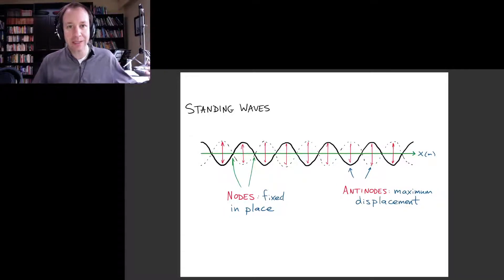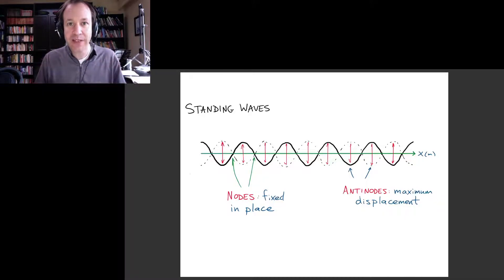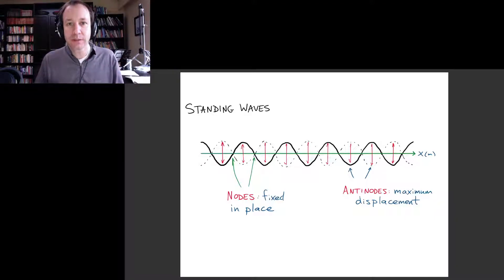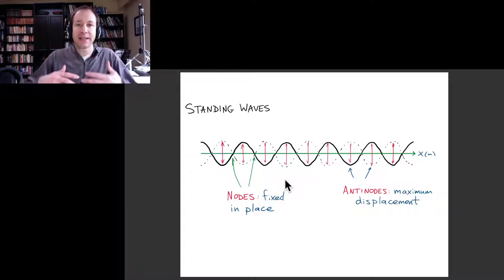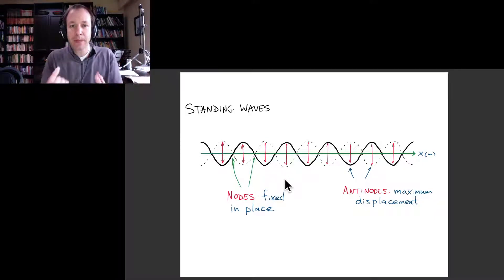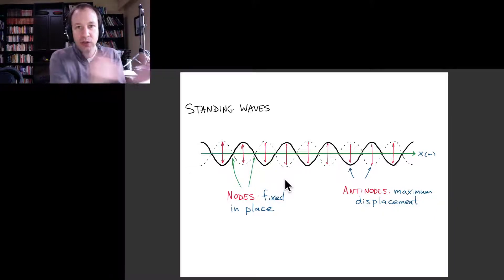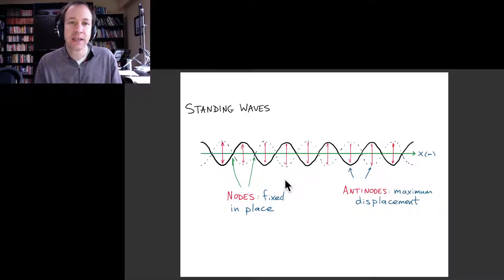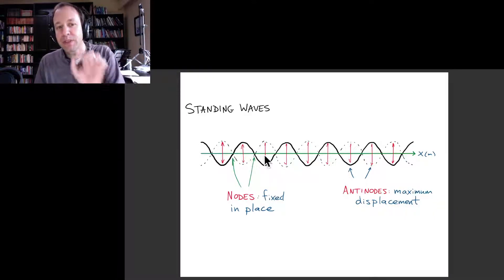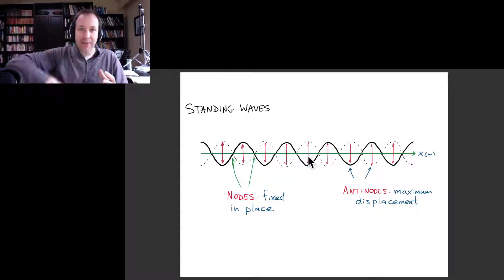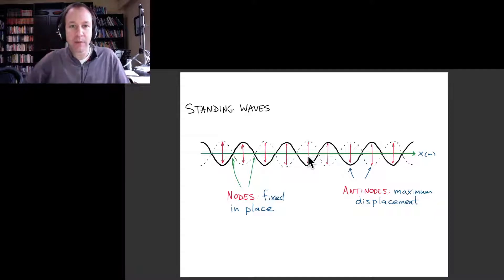Last time we talked about how a left-moving wave and a right-moving wave with the same wavelength propagating on the same medium, like a string, give rise to what's known as a standing wave. This is something that can have a sinusoidal profile but doesn't travel left or right — it's fixed in place, with certain positions that don't vibrate at all, and in between you have vibrations up and down in simple harmonic motion.